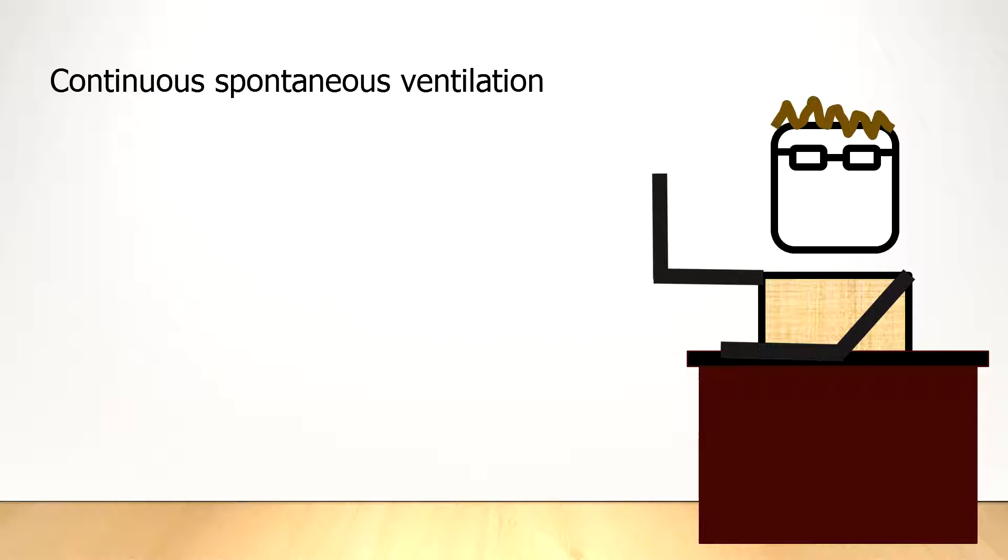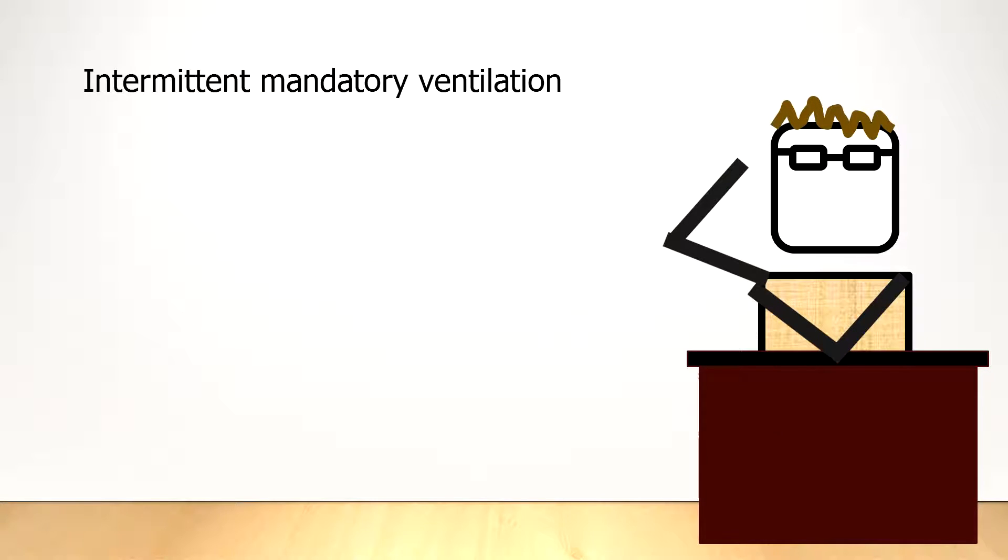This sequence is used in pressure support ventilation. Intermittent mandatory ventilation is the in-between breath sequence. Spontaneous breaths by the patient are permitted, and the ventilator can be set to provide pressure support to help with those breaths. But the mandatory breaths are completely programmed by the operator.